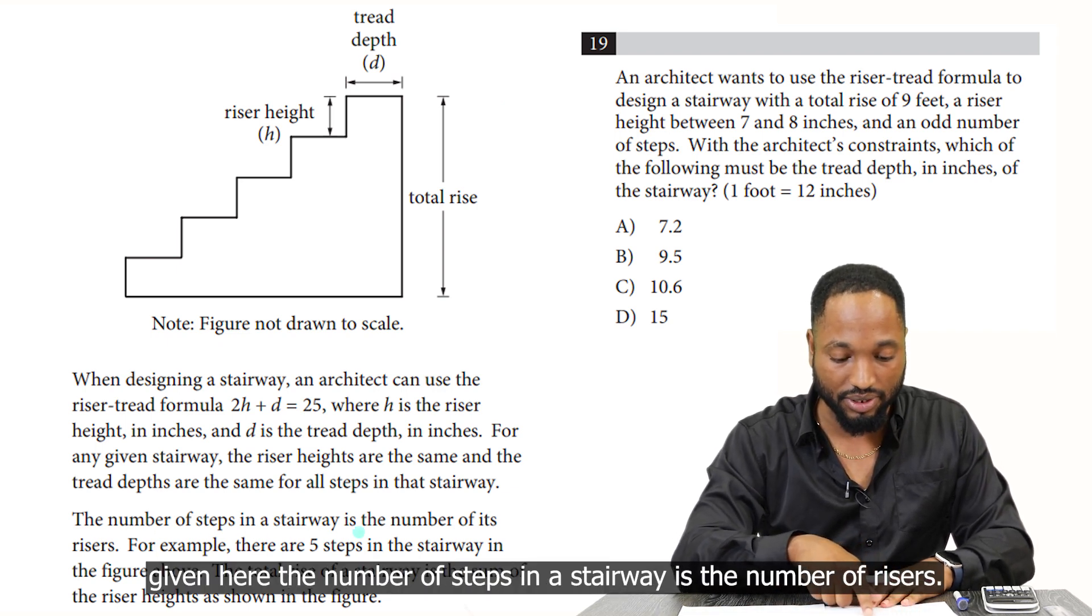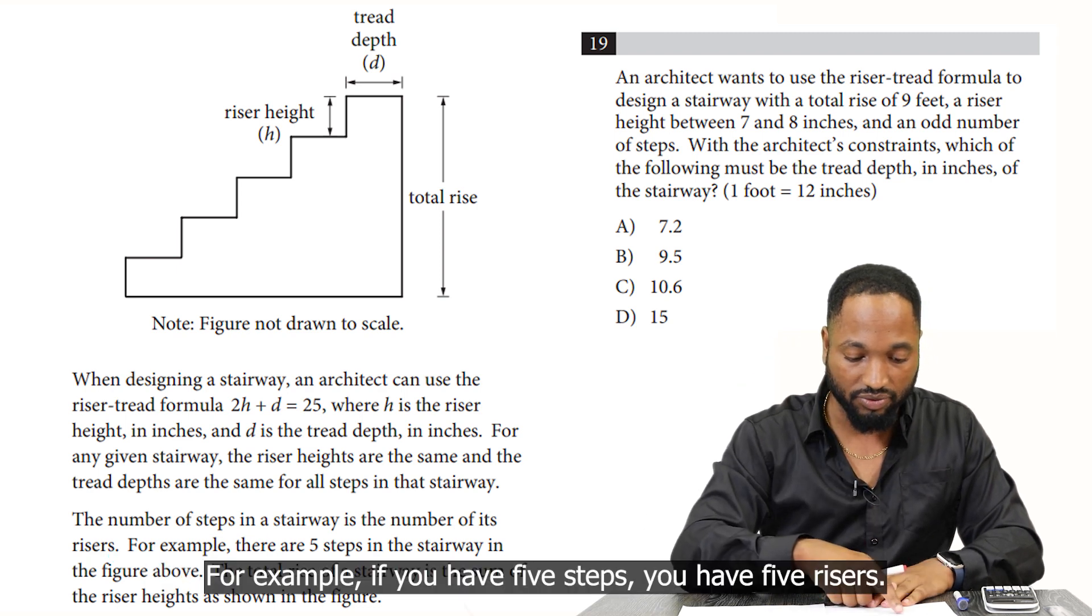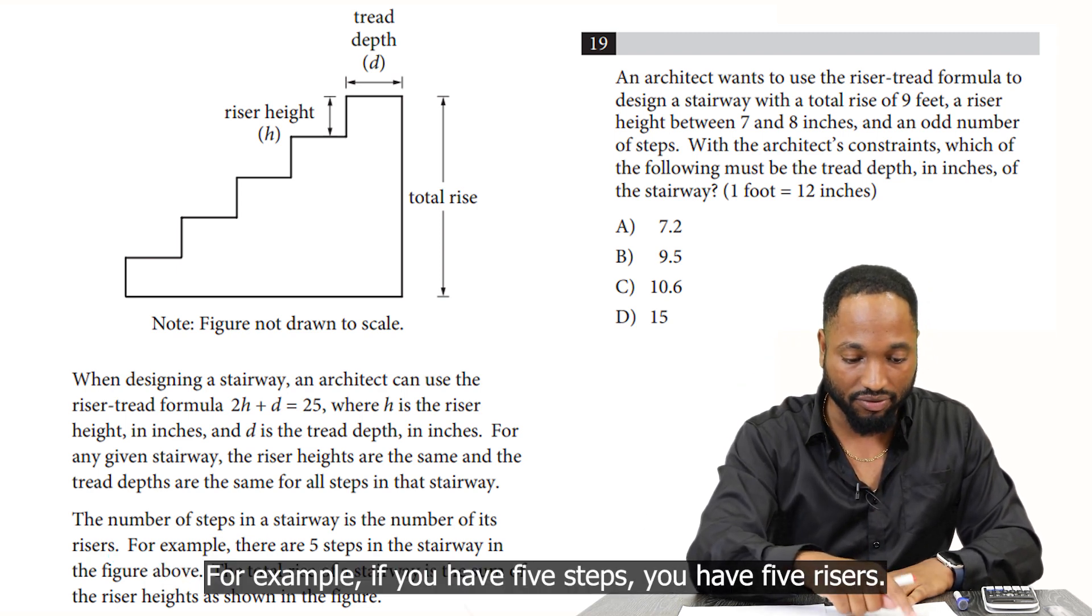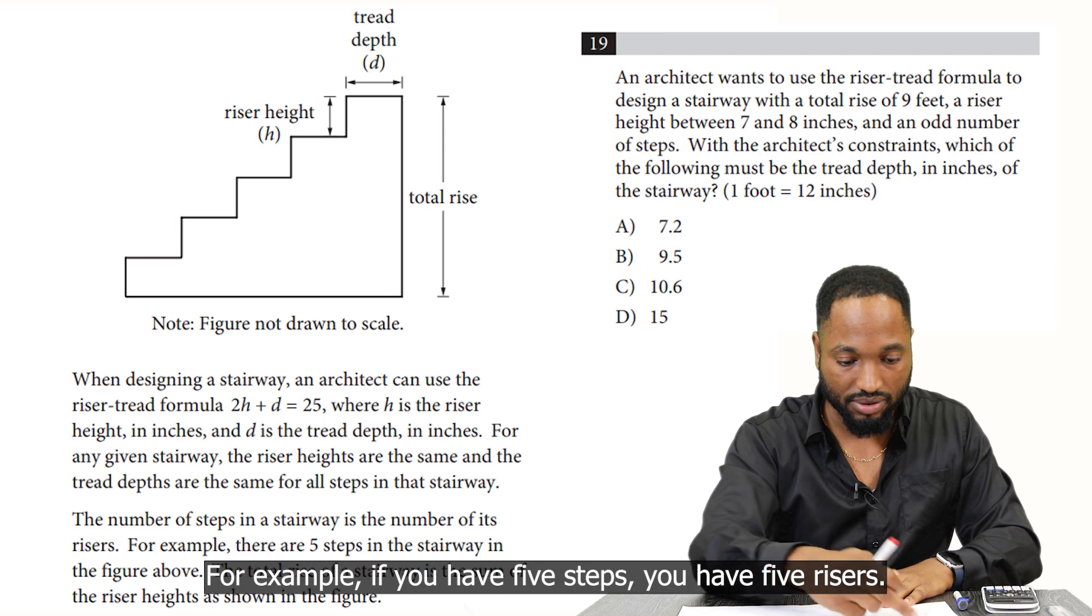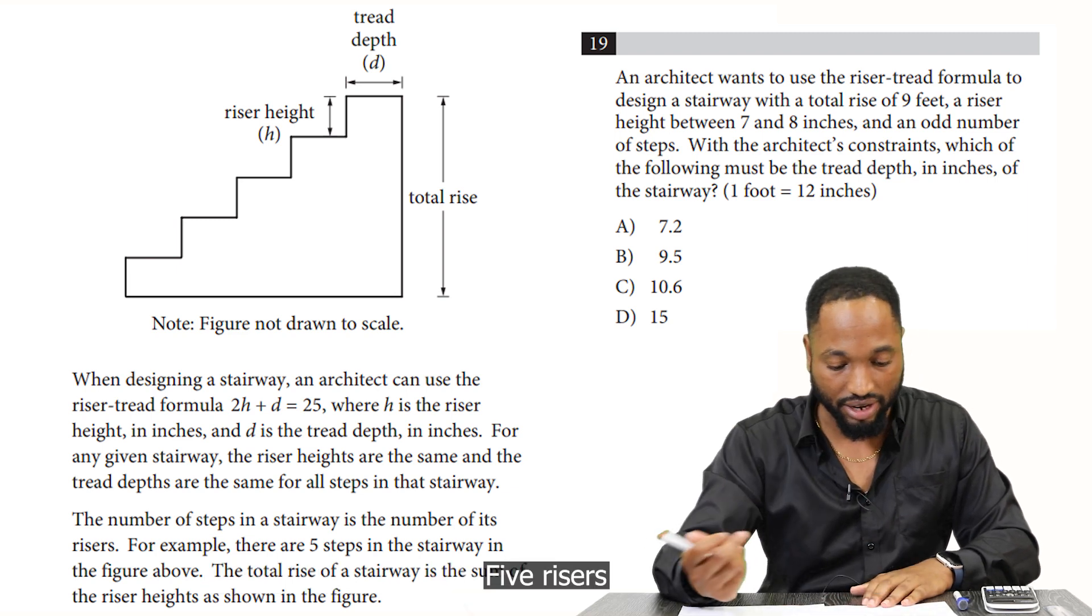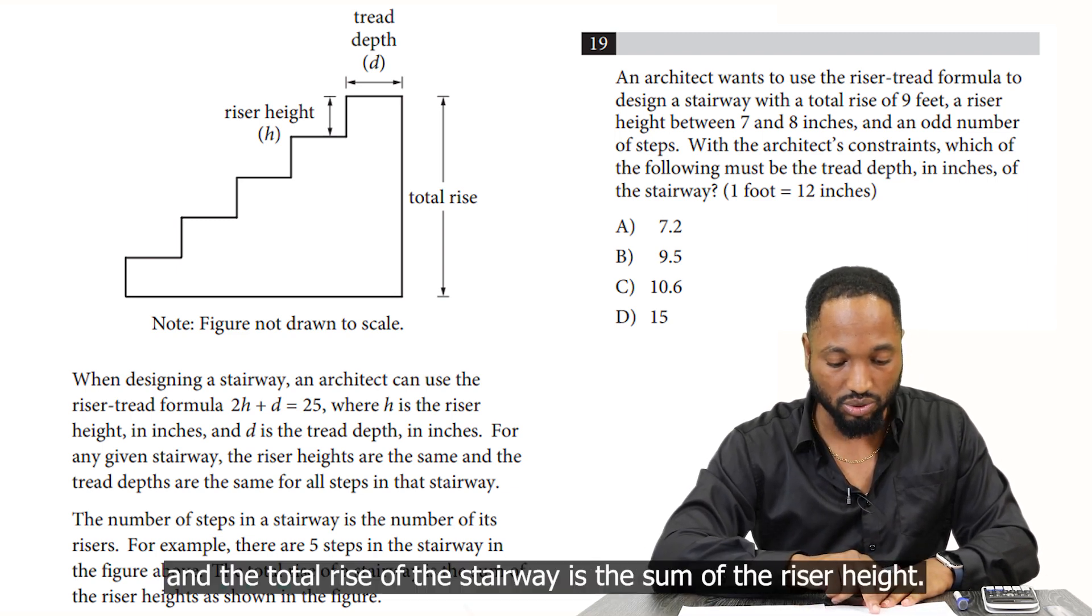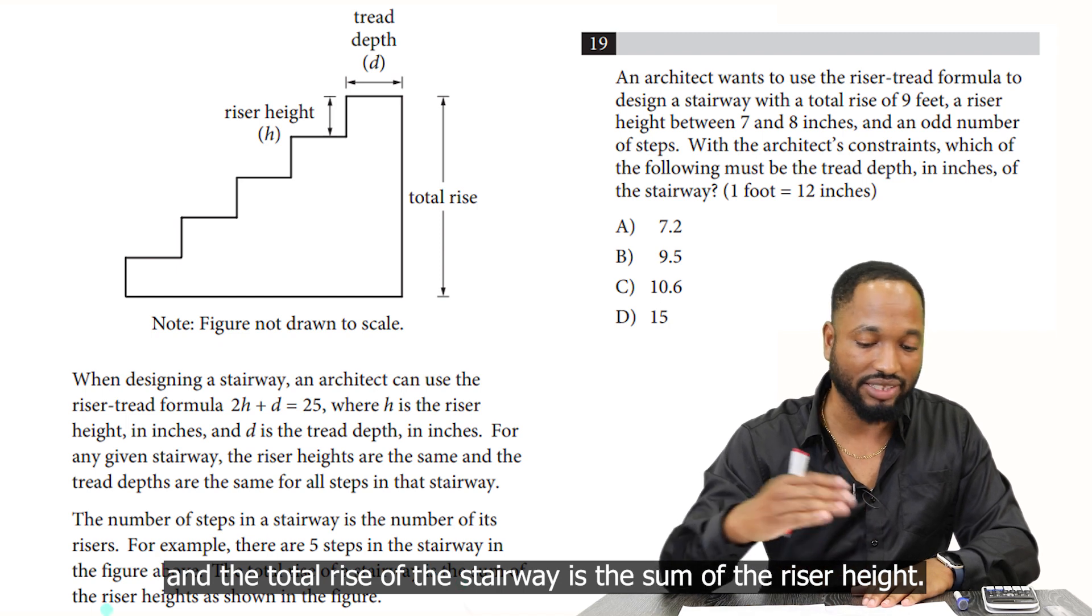The number of steps in a stairway is the number of risers. For example, if you have five steps, you have five risers. And the total rise of the stairway is the sum of the riser heights.